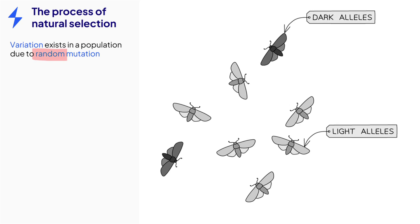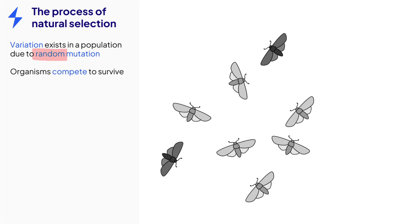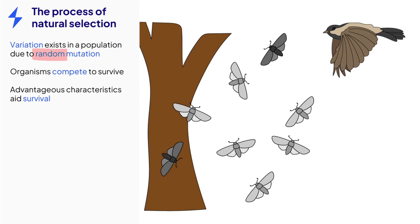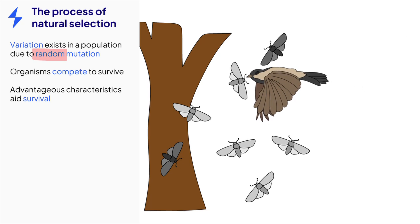The moth population is subject to pressures in the environment, which means that they must compete for survival. For example, there may be predators such as birds that will prey on moths. Some of the moths have alleles which are advantageous and which aid their survival. For example, the dark moth is better camouflaged against tree bark, so is less likely to be eaten by predators.